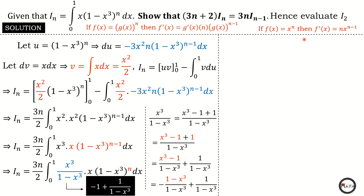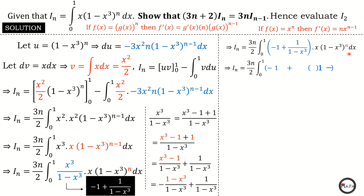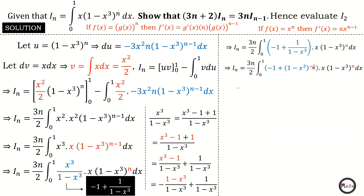Replacing x cubed divided by (1 minus x cubed) with negative one plus one divided by (1 minus x cubed), I rewrite one over (1 minus x cubed) as (1 minus x cubed) raised to the power negative one. I then multiply the quantity x times (1 minus x cubed) raised to the power n by negative one to get the negative of it, and then multiply by (1 minus x cubed) raised to the power negative one for the second term.